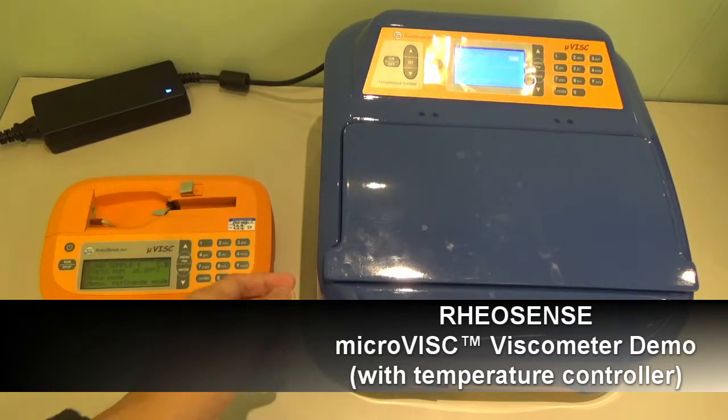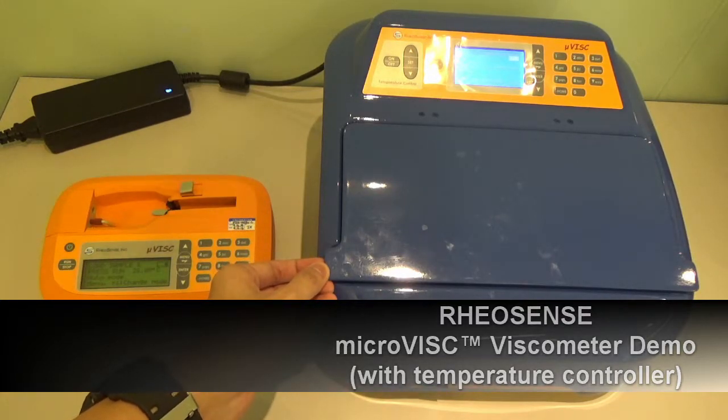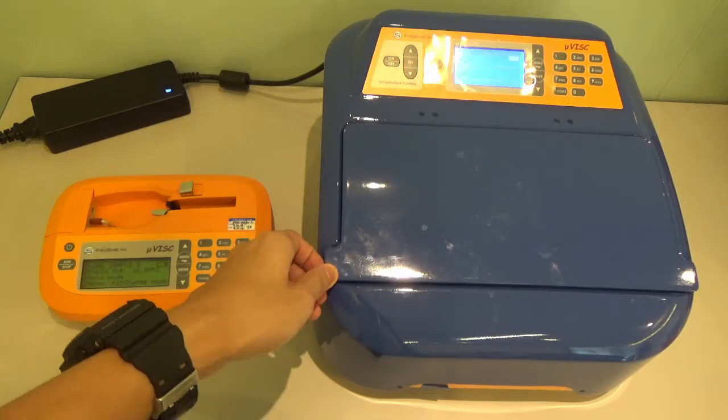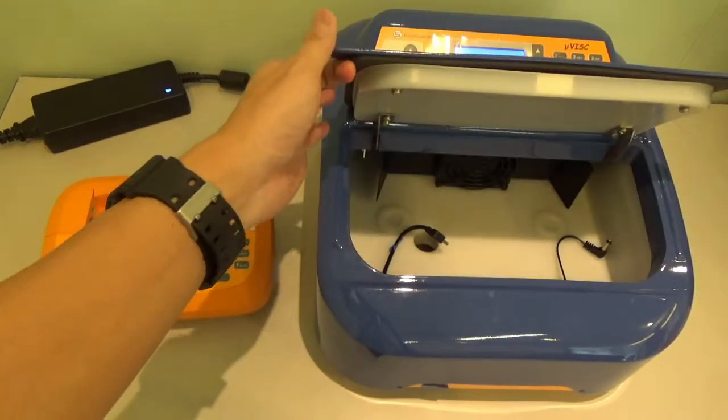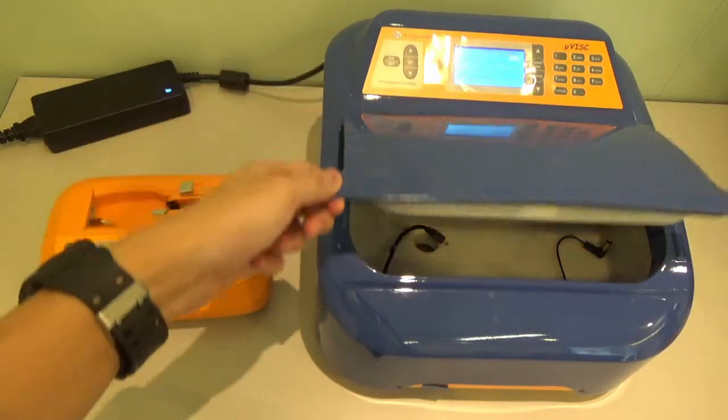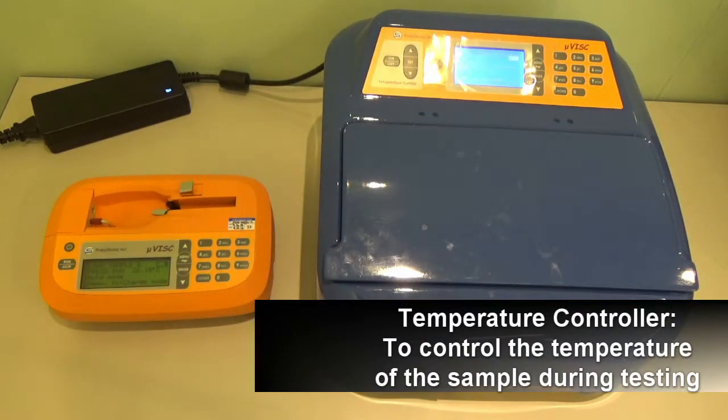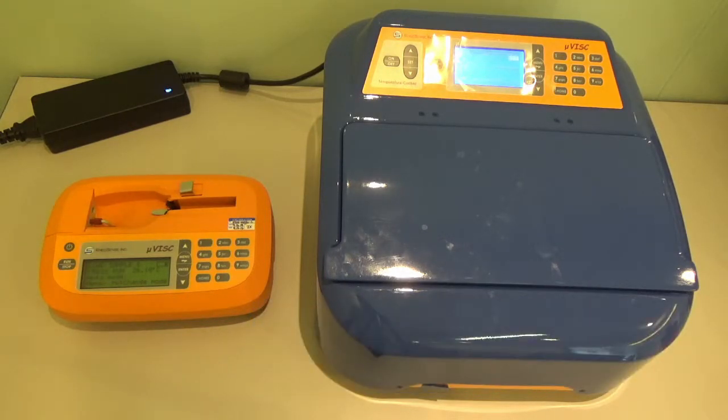Hi guys, today we have this additional temperature control equipment for the microVISC. Basically, the function of this unit is to control the temperature that you need during the running of samples, so you can control the temperature of the sample that you wish to run.